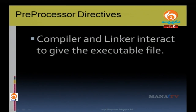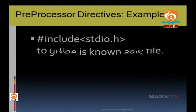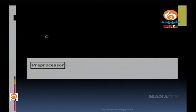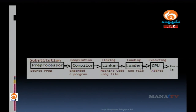The linker links the header files — stdio.h, conio.h, math.h — all stored in library functions. Those library functions are called header files and are linked by the linker. The line #include stdio.h is known as a preprocessor directive. The preprocessor processes the source program before compiling; once compiled, it expands into the .obj file.